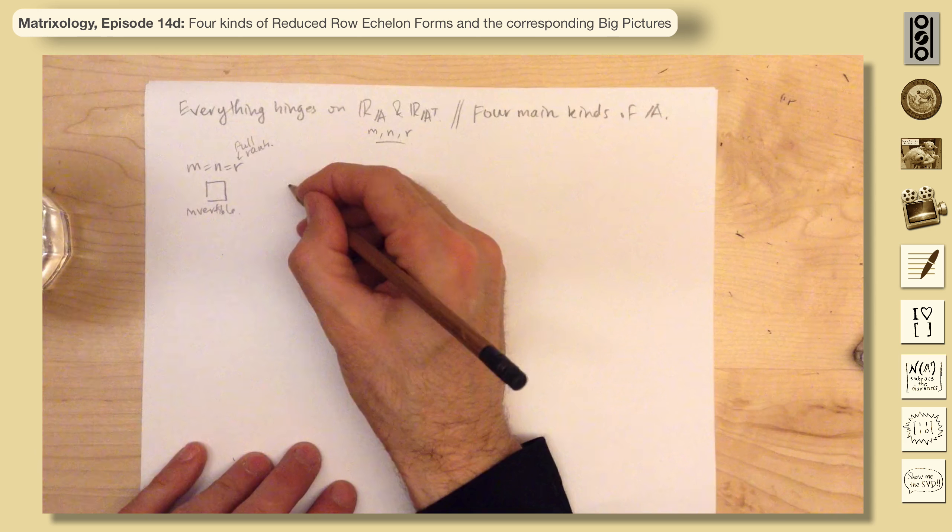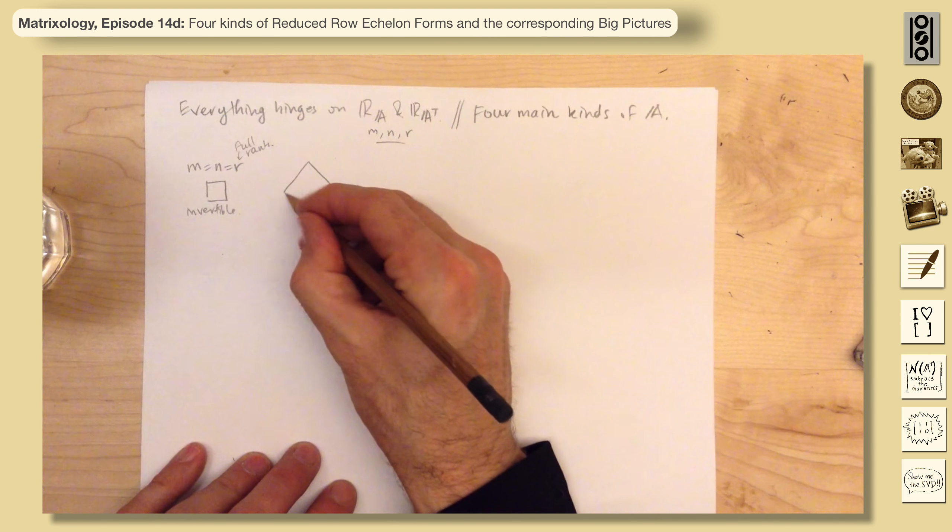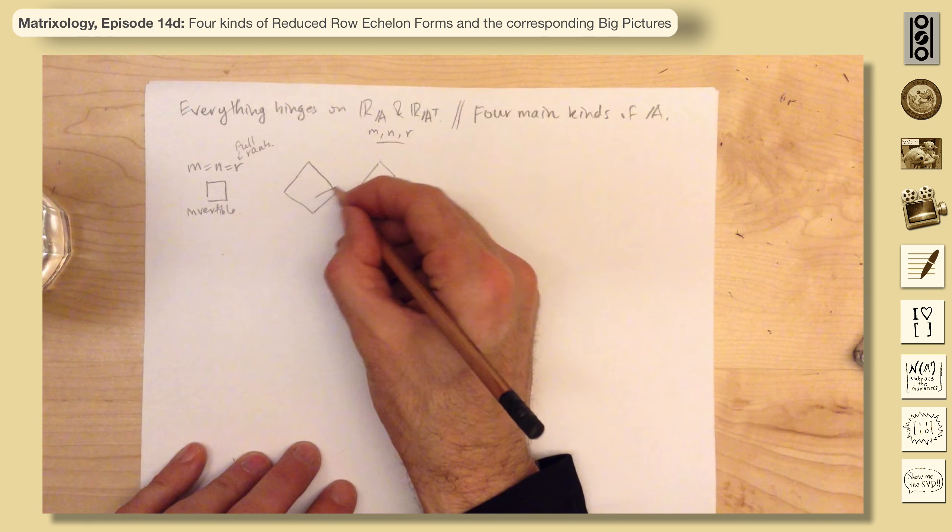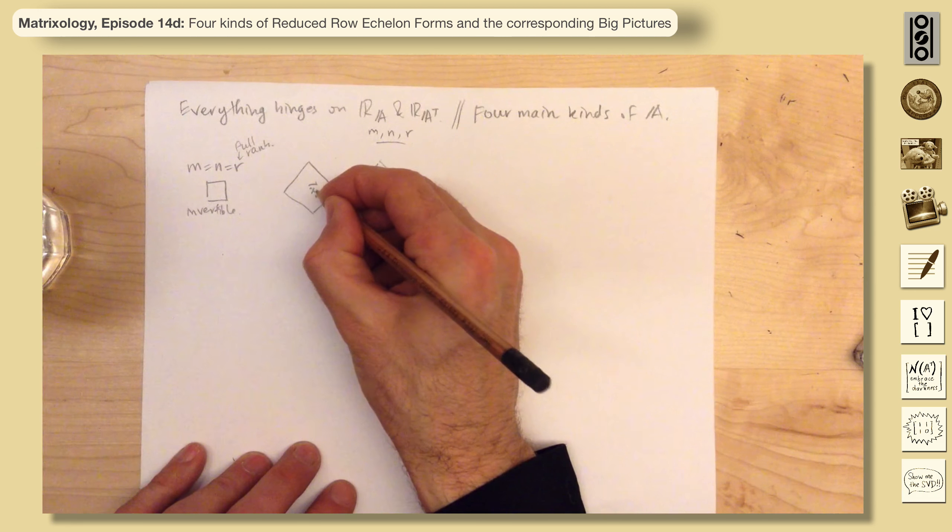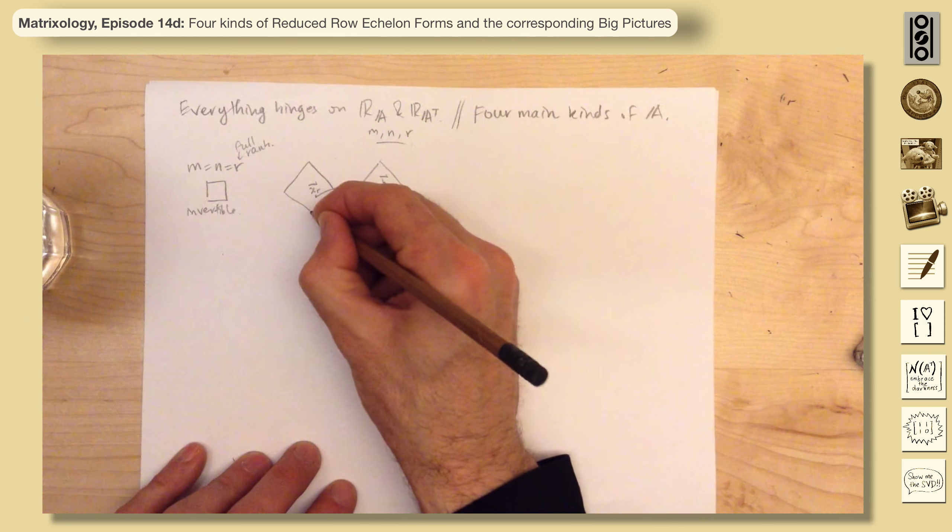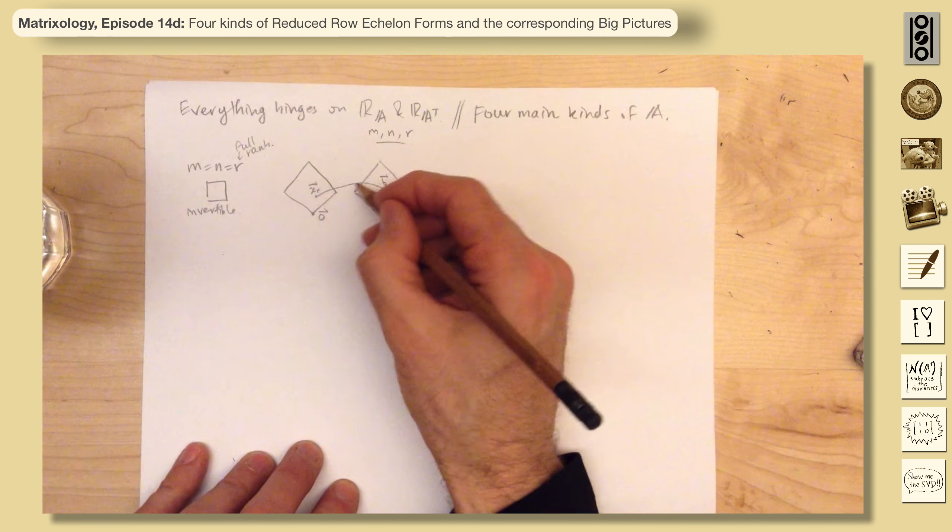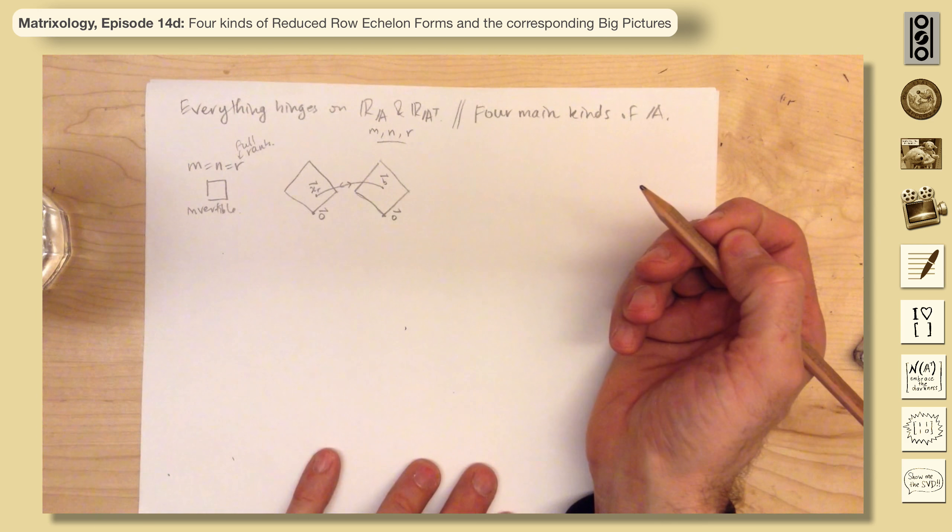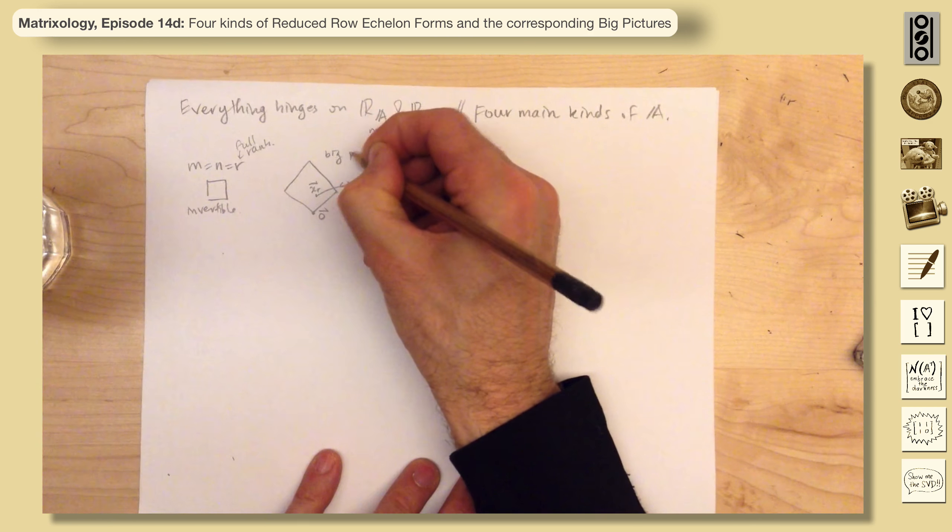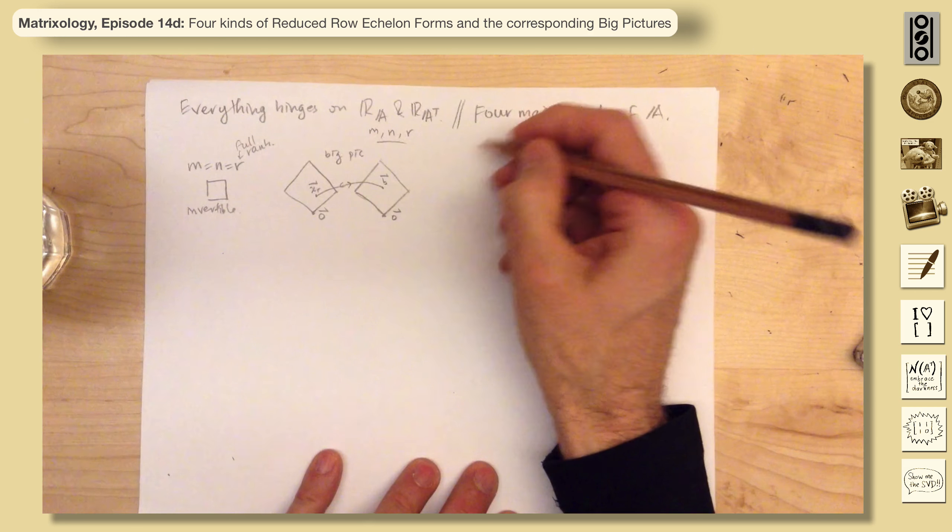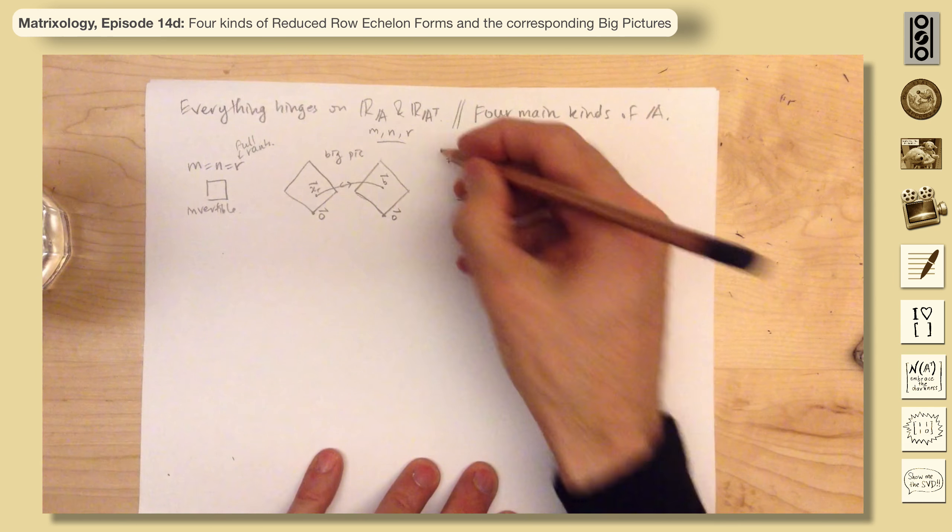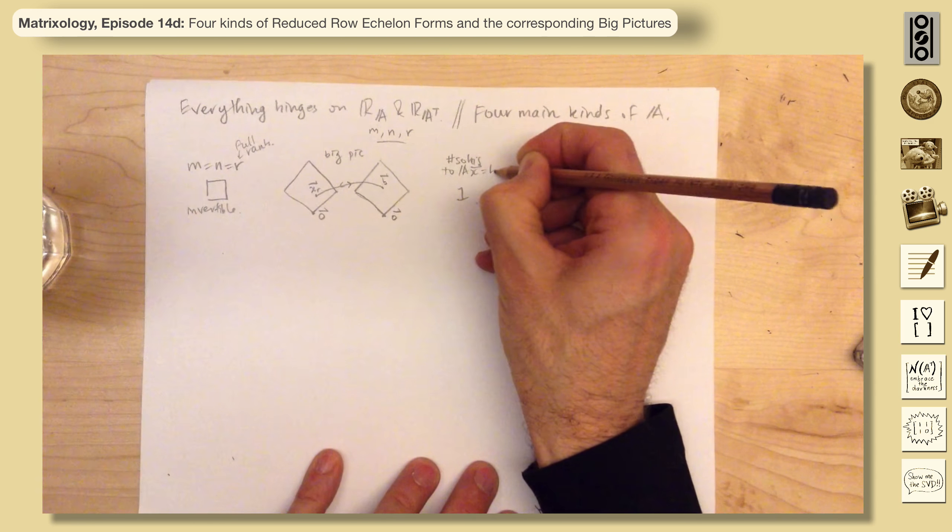So that's a big deal. And so their big picture version looks like this. And this abstract thing, so here's X, R, and B, and that's it. There's no left null space, no right null space. You can go back and forth. So let's write this. So here's M and R. This would be the big picture in the middle here. Number of solutions. I'll list this here. One. Always one. To AX equals B. Always one.